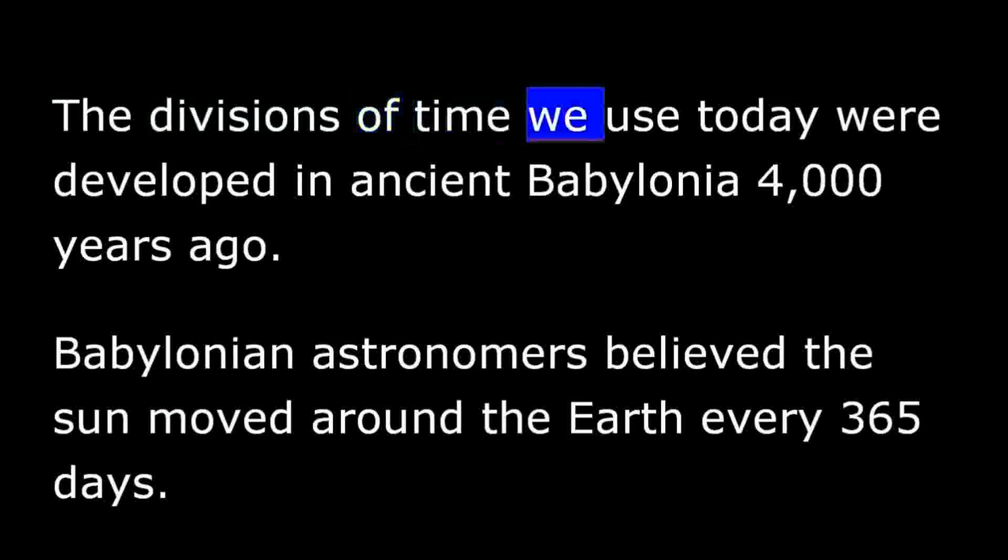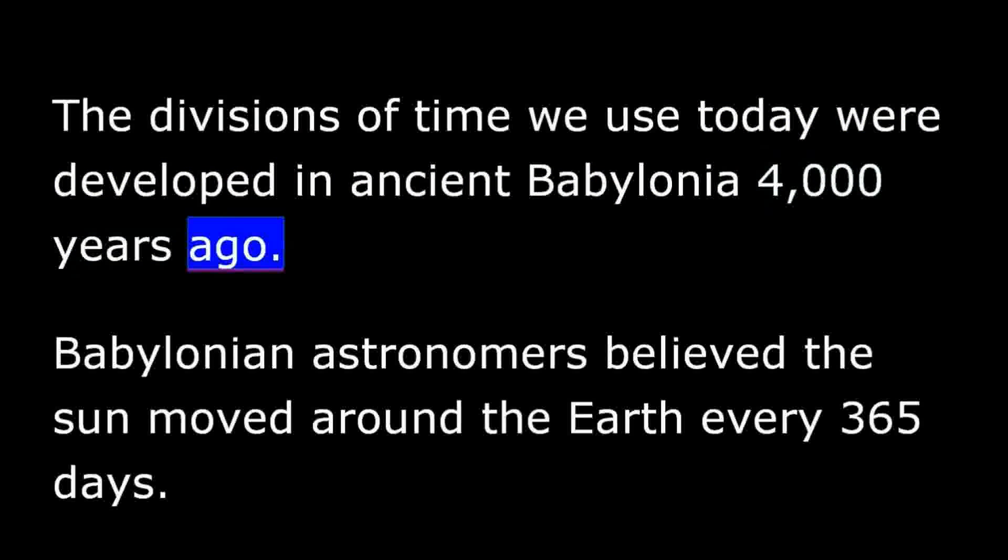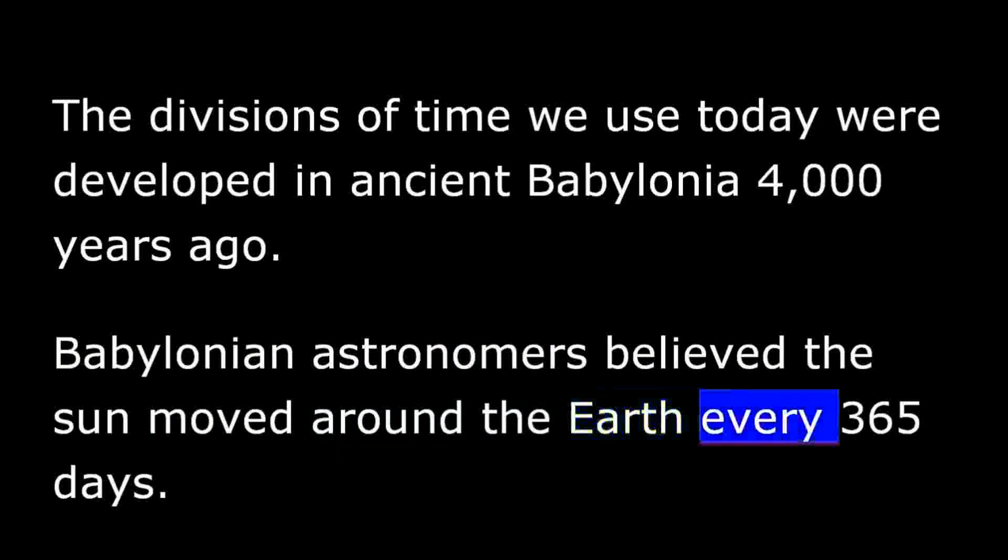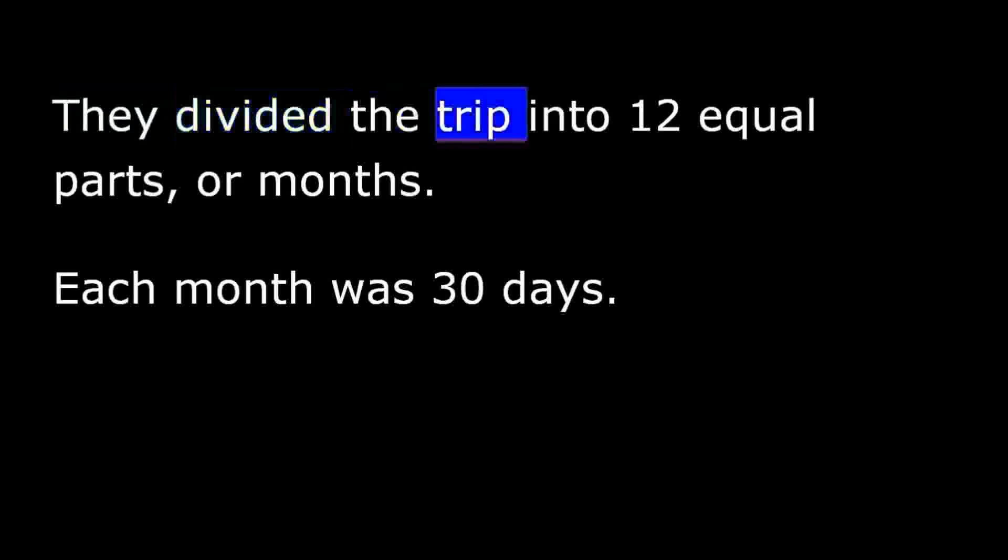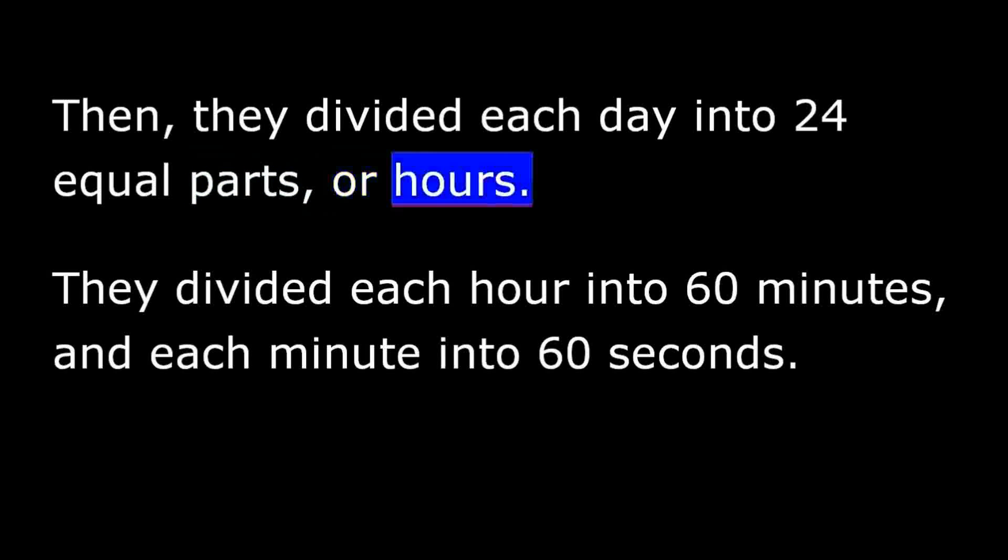The divisions of time we use today were developed in ancient Babylonia 4,000 years ago. Babylonian astronomers believed the sun moved around the earth every 365 days. They divided the trip into 12 equal parts or months. Each month was 30 days. Then they divided each day into 24 equal parts or hours. They divided each hour into 60 minutes and each minute into 60 seconds.